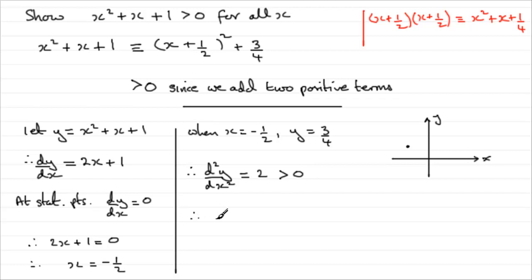And so, therefore, this tells us that our stationary point, hopefully you're familiar with this, that if d2y by dx squared is greater than 0, it tells us our stationary point is a minimum.